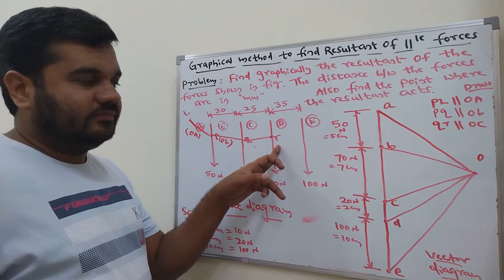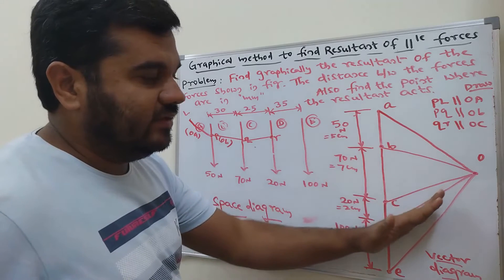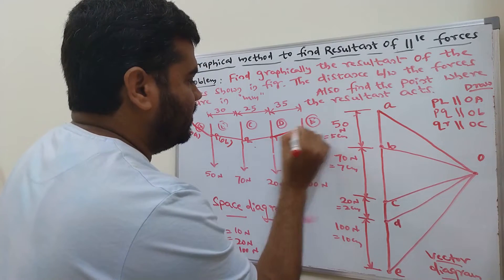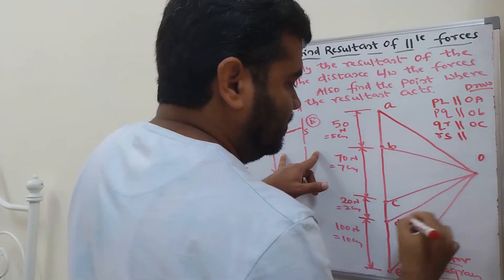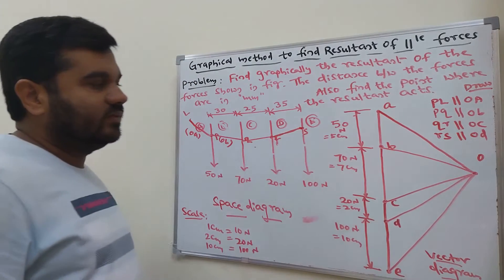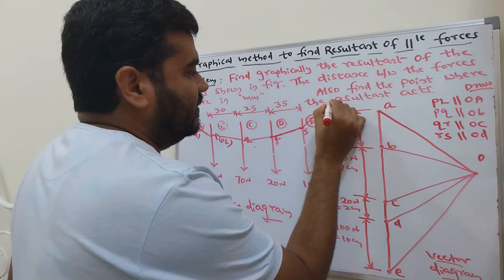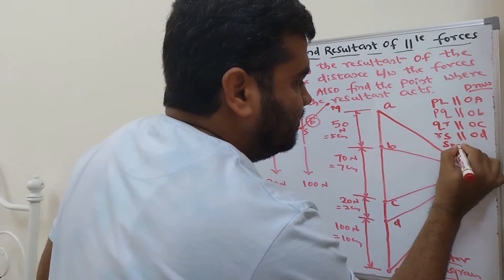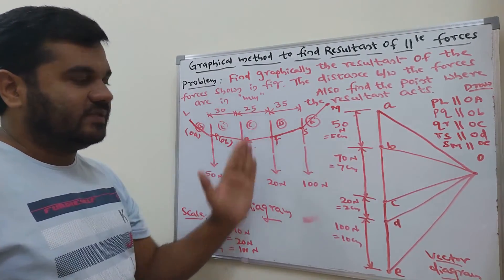From point R, draw line RS parallel to OD. Then from point S, draw line SM parallel to OE. In this way, transfer all these rays from the vector diagram onto the corresponding lines of action of the forces in the space diagram.